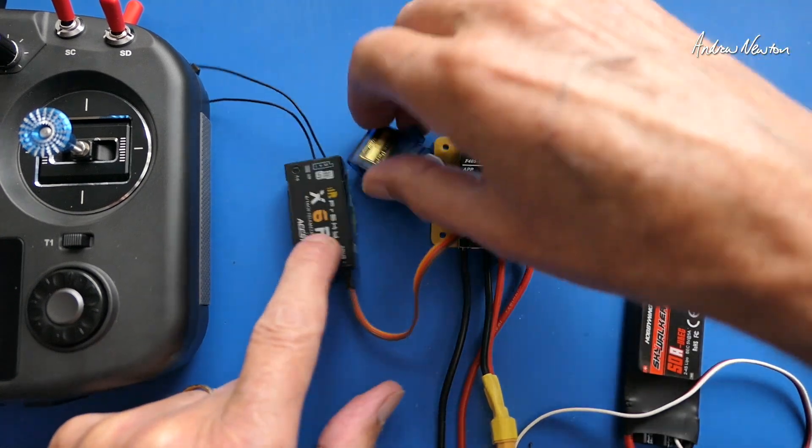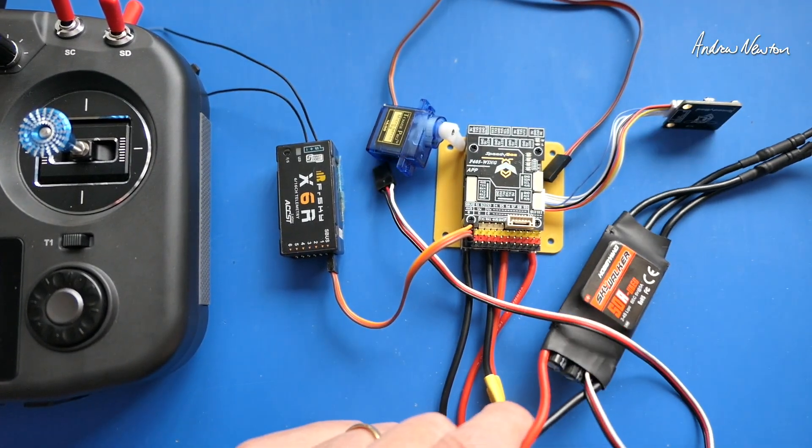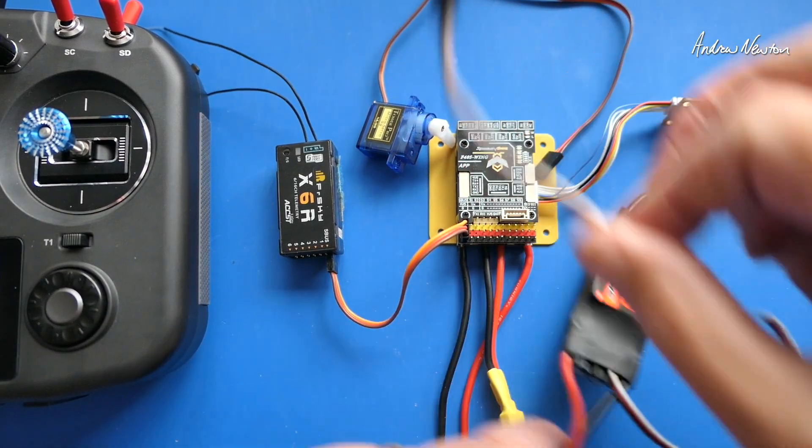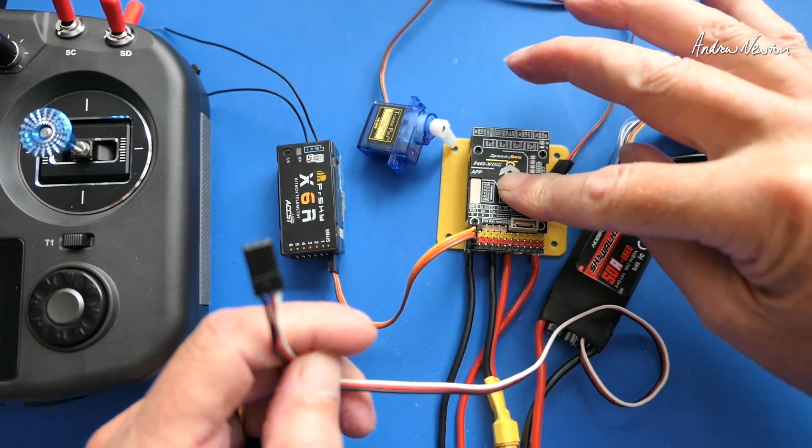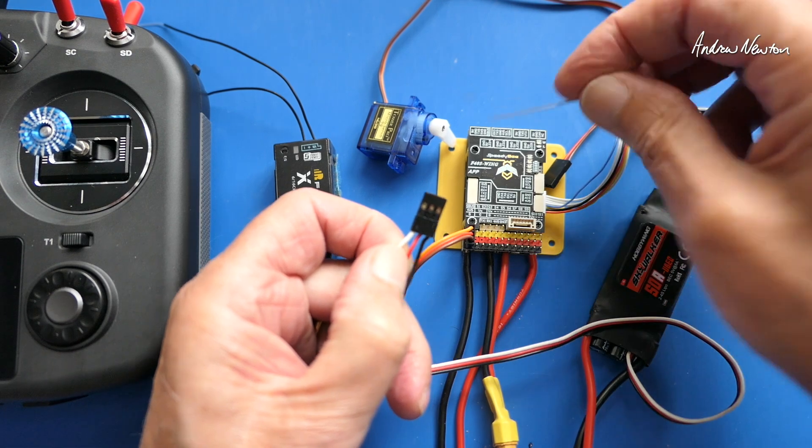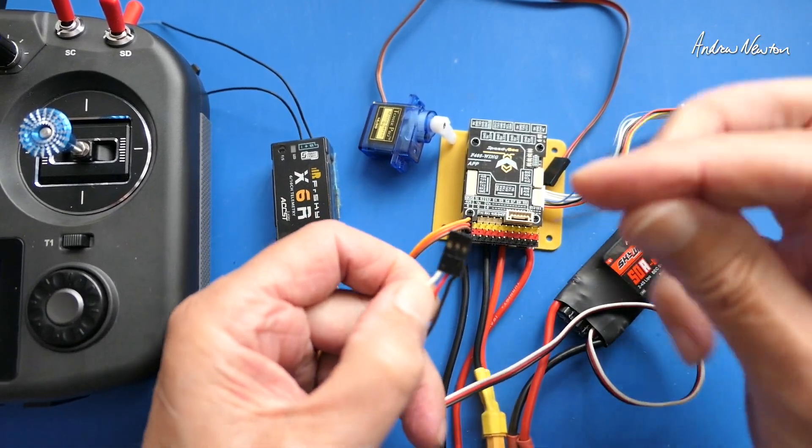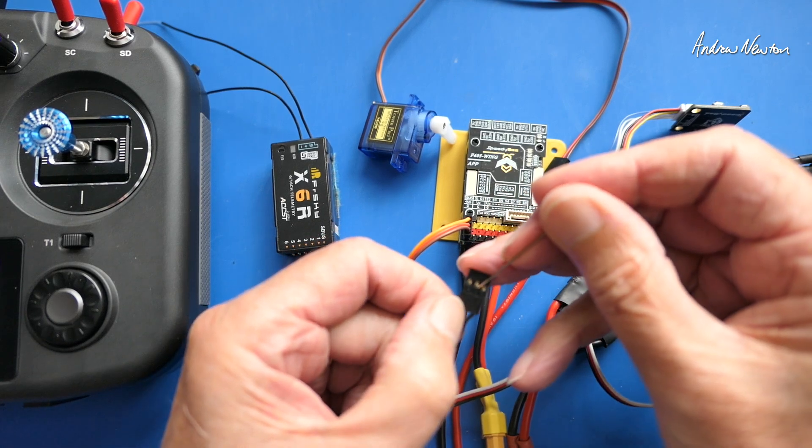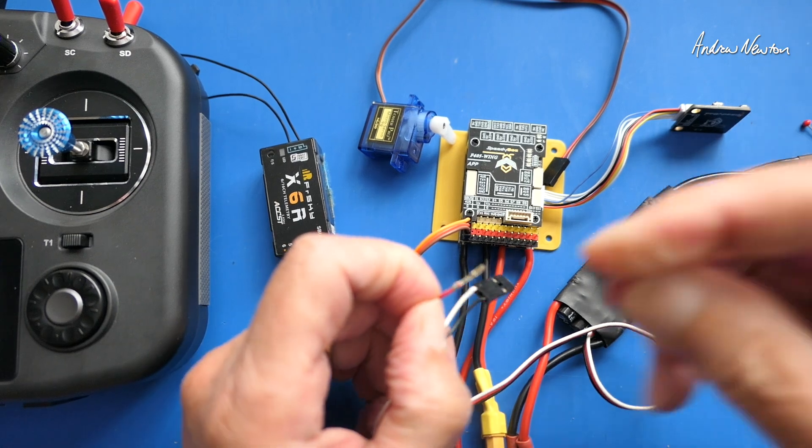Now the receiver and the servos need five volts to operate. And that is not going to come from the speed controller in this case. The flight control board has its own five volt voltage regulator built in. All of these red pins here are at five volts. So we don't need two five volt sources sort of competing with each other.